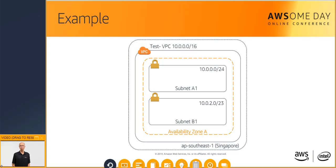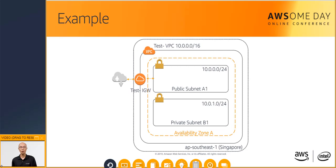Next, you will create a subnet named Subnet A1. You have assigned an IP address space that contains 256 IP addresses, and this subnet will live in AZ-A. Next, you will create another subnet called Subnet B1 and assign it an IP address space with 512 IP addresses. For the non-networking administrators in the audience, there are plenty of CIDR calculators online that can help you figure out the number of IP addresses in a CIDR range. We have added an internet gateway called Test IGW. Subnet A1 will become a public subnet where workloads can be directly accessed from the internet. Subnet B1 will be your private subnet that is isolated from the internet.